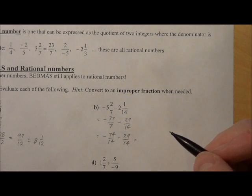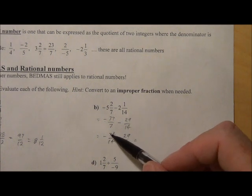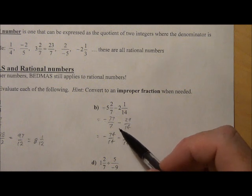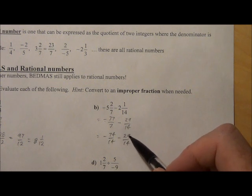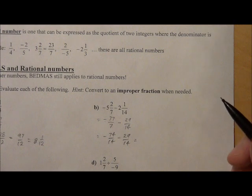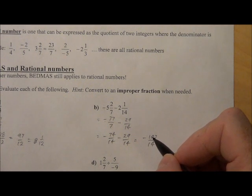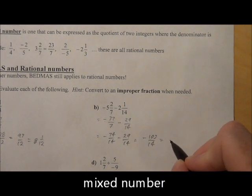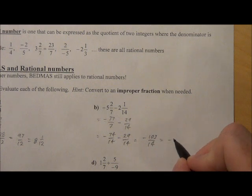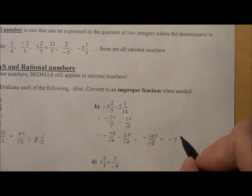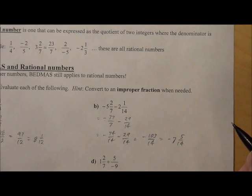Because they have the same sign, it's negative 74 minus 29, or it can also be seen as negative 74 plus negative 29. The two signs are the same, so we just add the numbers and leave the same sign together. So we get negative 103 over 14. And then we change that into an improper fraction, so we get negative 7 and 5 fourteenths.